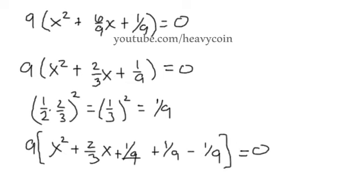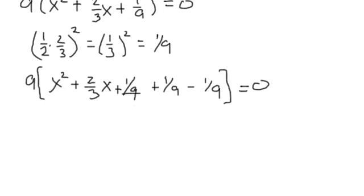It's all set equal to 0. So we have 9, start a parenthesis. We have x plus, then we take a half of 2/3. So a half times 2/3 is just going to end up being 1/3, squared. 1/9 minus 1/9 is 0, so we don't have to write anything there.